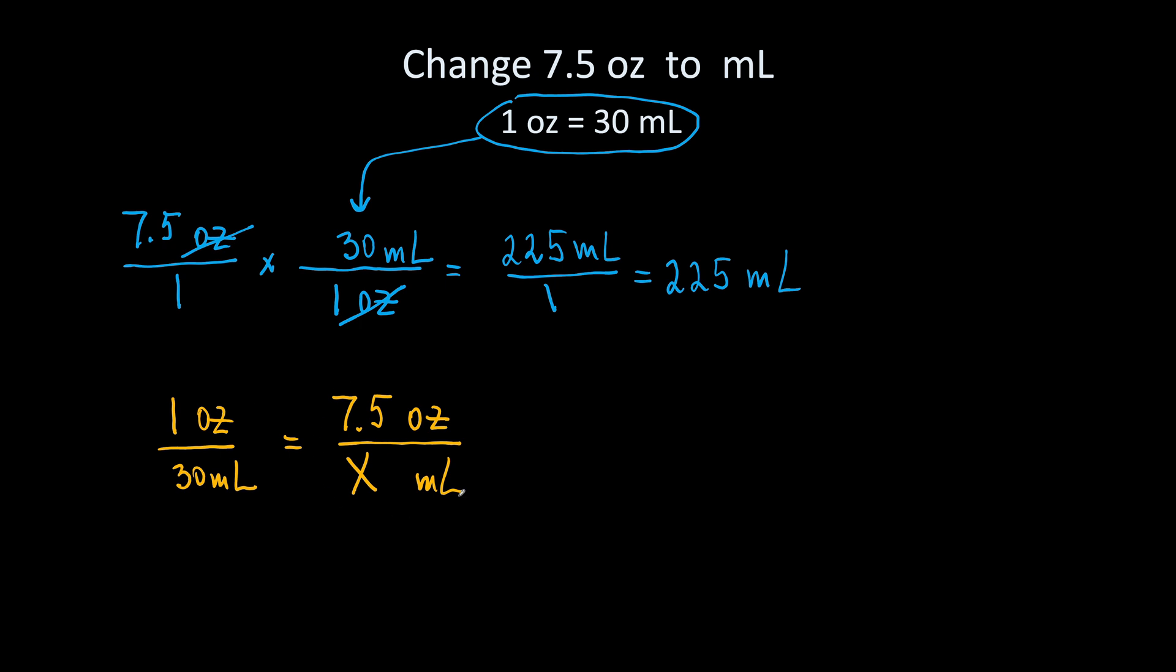One ratio is equal to the other ratio and we are consistent. Ounces on top, milliliters on the bottom. To solve this proportion you cross multiply.